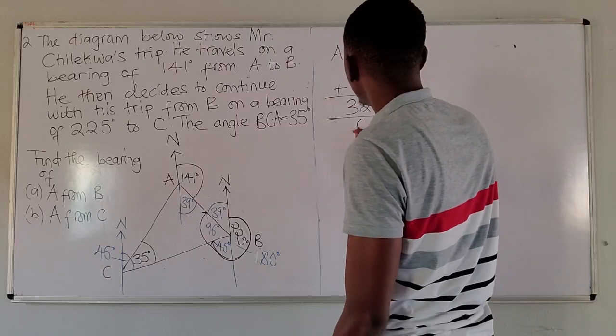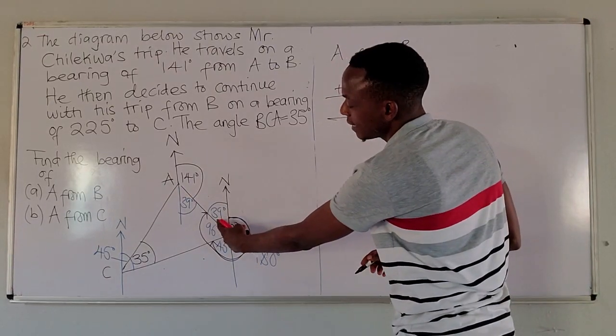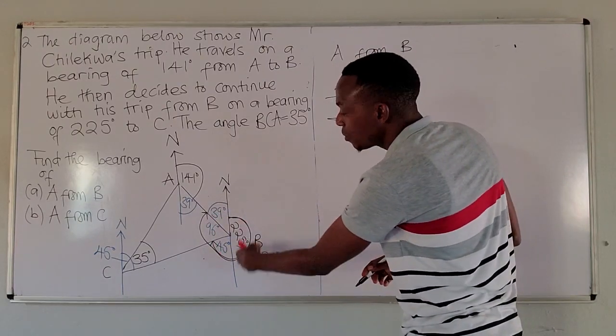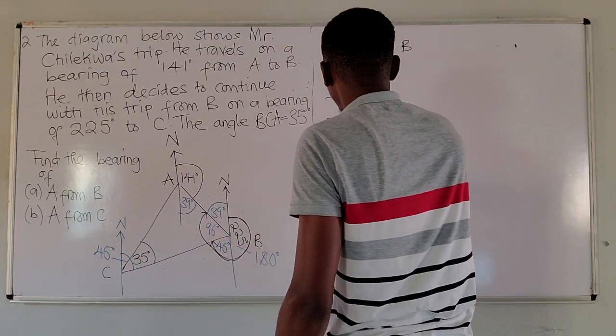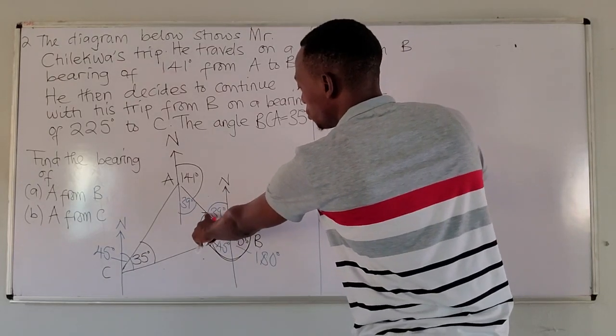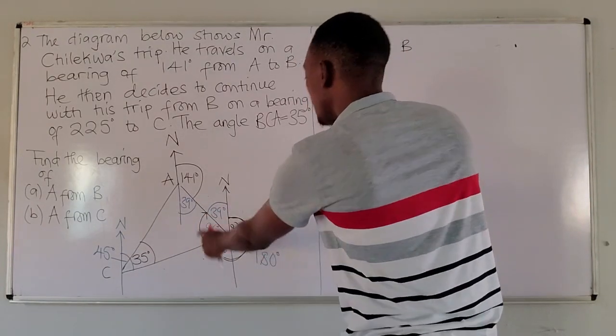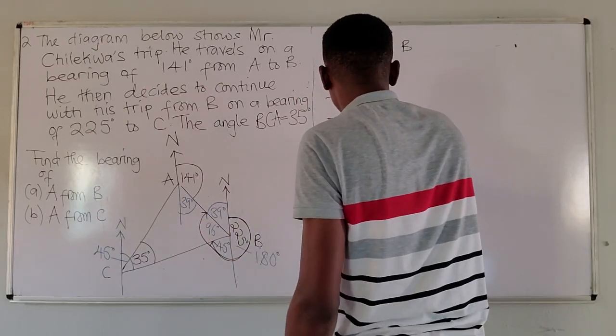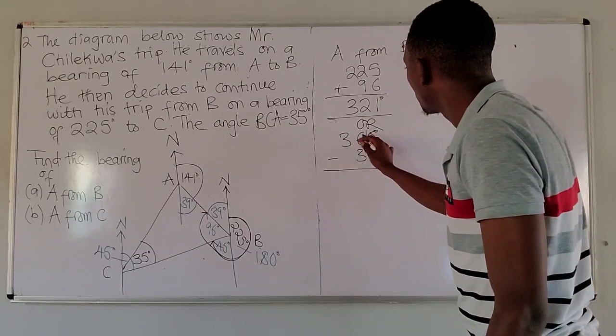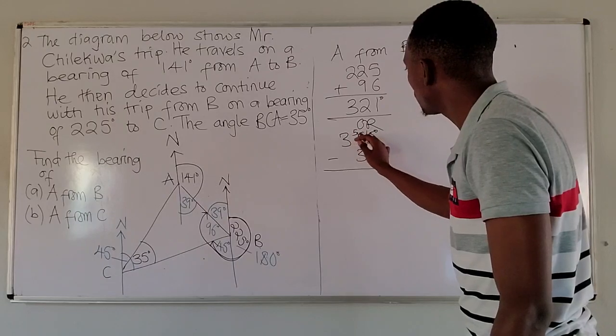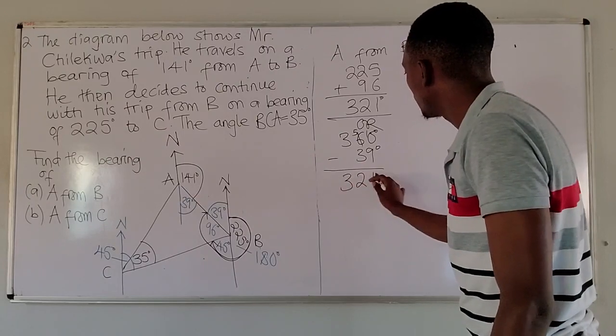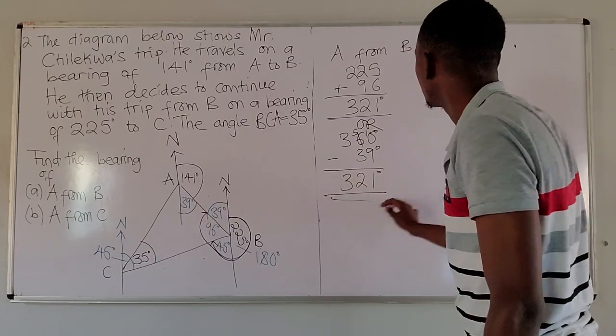The other way around: since we know here is 39 degrees, we can just subtract from the revolution. We can subtract from 360 degrees. So 360 degrees, we subtract 39. Once we remove this portion, we remain with the rest of it. This gives us 321. You can see it is giving us the same answer.